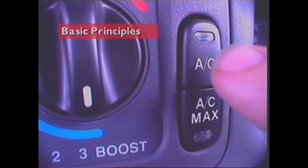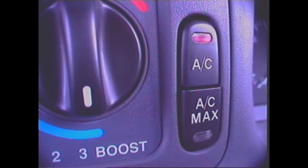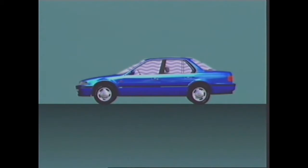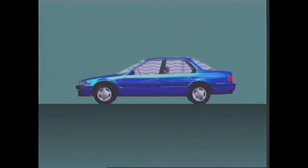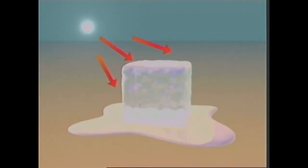This section examines the basic principles of air conditioning. The function of the air conditioning system is to reduce the temperature inside the passenger compartment to a level that ensures passenger comfort. It achieves this by removing excess heat and transferring it to the outside of the vehicle. Cold is simply a relative absence of heat — a condition which exists after heat has been removed. Heat always travels from a hotter object to a colder object.